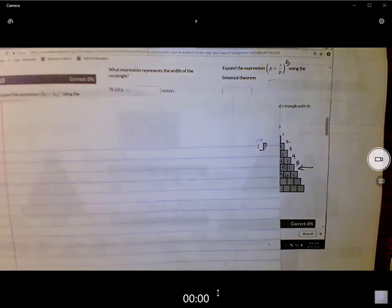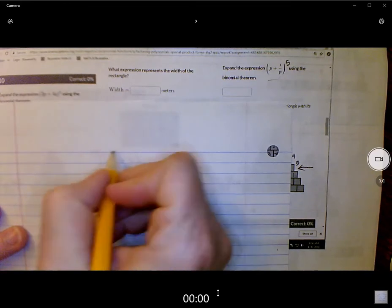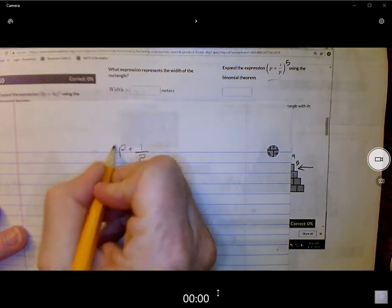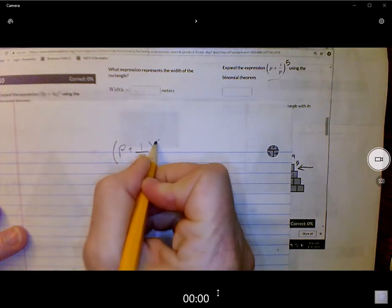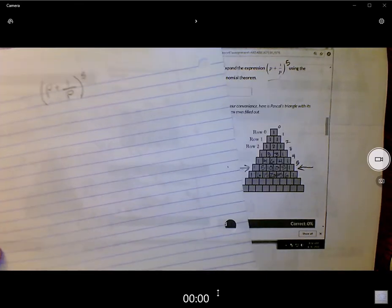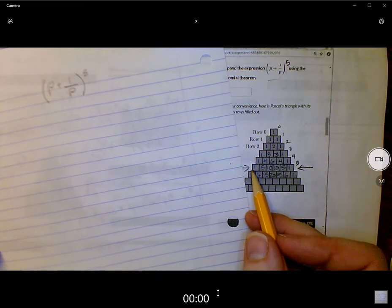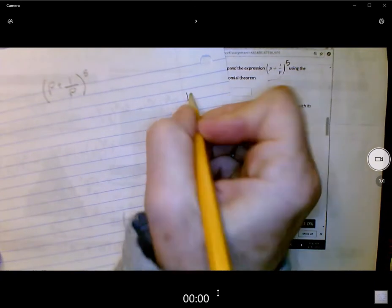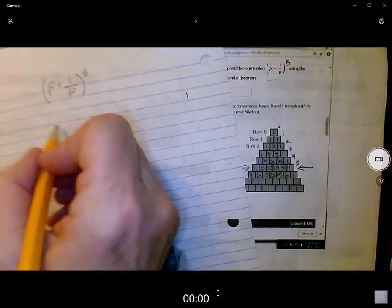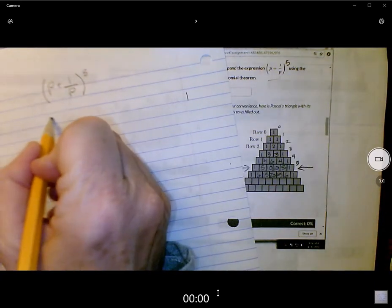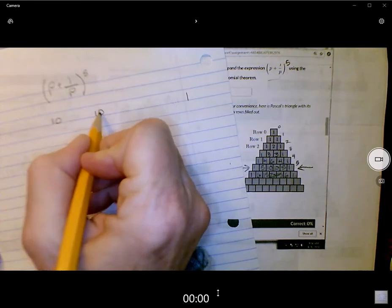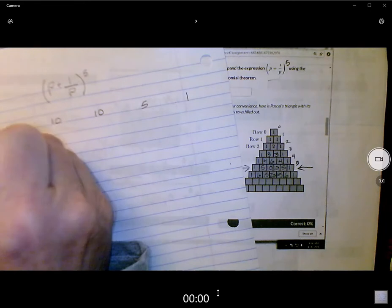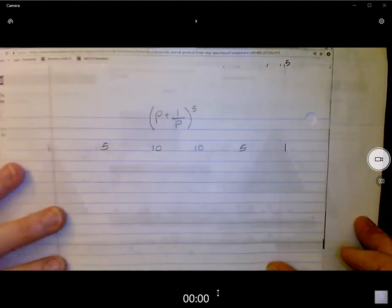So here we go. Let's just do it. So here's the problem. P plus 1 over P to the fifth. And again, I like to take up a lot of real estate so that I've got plenty of room to work. So I'm going to spread this way out. Ones on the ends, a couple of tens in the middle, and that's a 5 and a 5. That should be enough room right there.